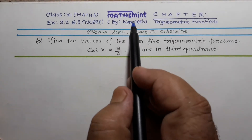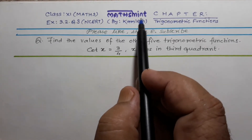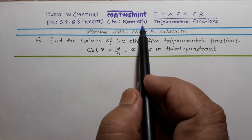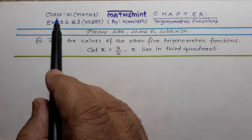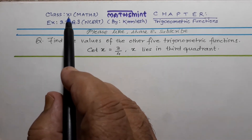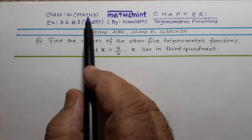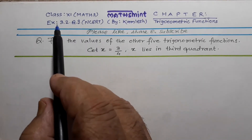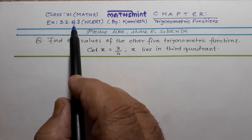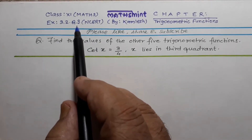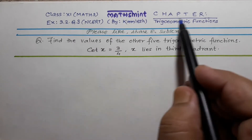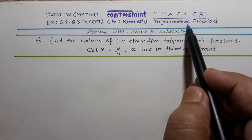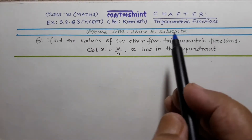Hello students, welcome to channel Maths Mint by Kamles. Today I will solve for class 11 Maths, exercise 3.2, question number 3 from NCRT book. The chapter is trigonometric functions.